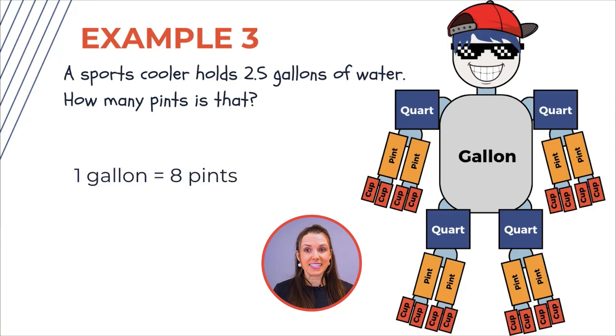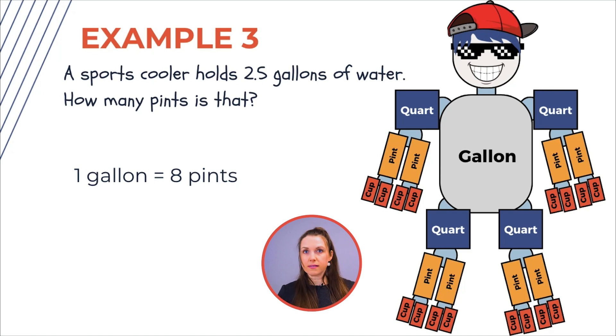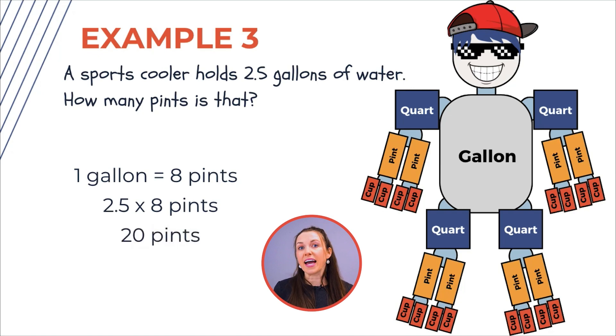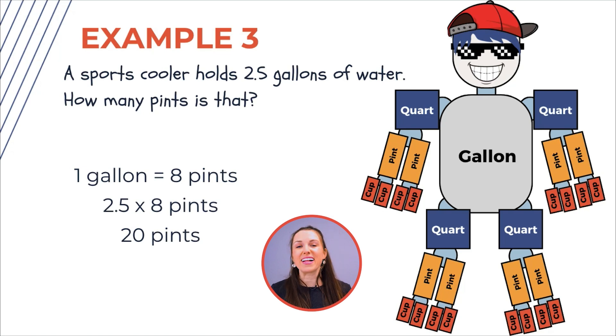Example number three: a sports cooler holds 2.5 gallons of water. How many pints is that? One gallon is eight pints — I can just count eight pints on my Gallon Man here. So 2.5 gallons times eight pints gives me 20 pints. The 2.5 gallons of water is 20 pints of water.